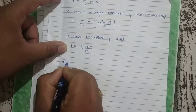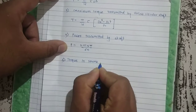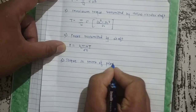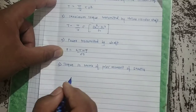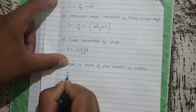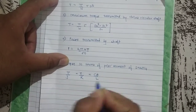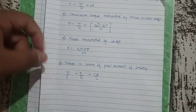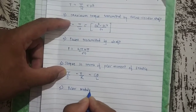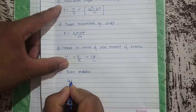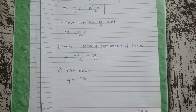Fifth formula: torque in terms of polar moment. That is T/J is equal to τ/r is equal to Cθ/r. Next, sixth formula is polar modulus, denoted by Zp. Zp is nothing but J divided by r, where J is the polar moment of inertia.